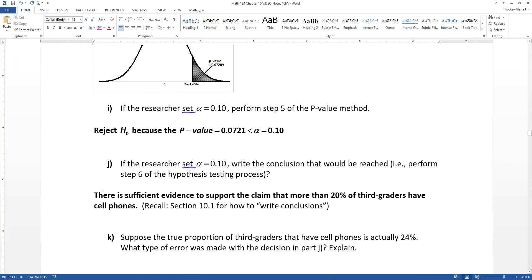That means that we will write our conclusion as there is sufficient evidence to support the claim, and then we write down what the claim is: more than 20% of third graders have cell phones. Just a little reminder, we went over in section 10.1 how to write conclusions.